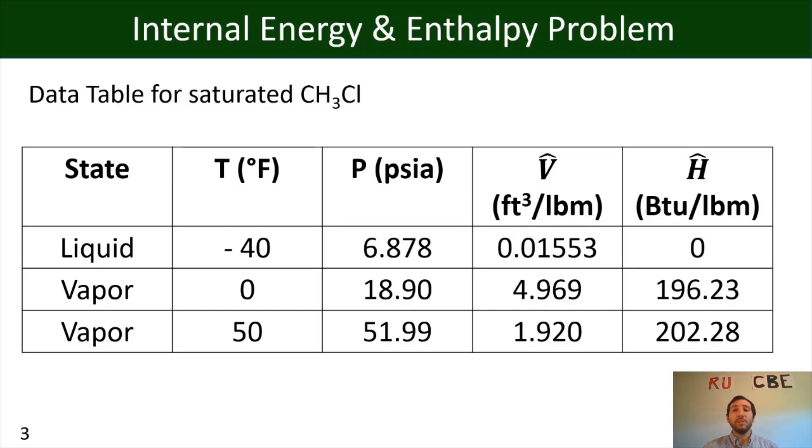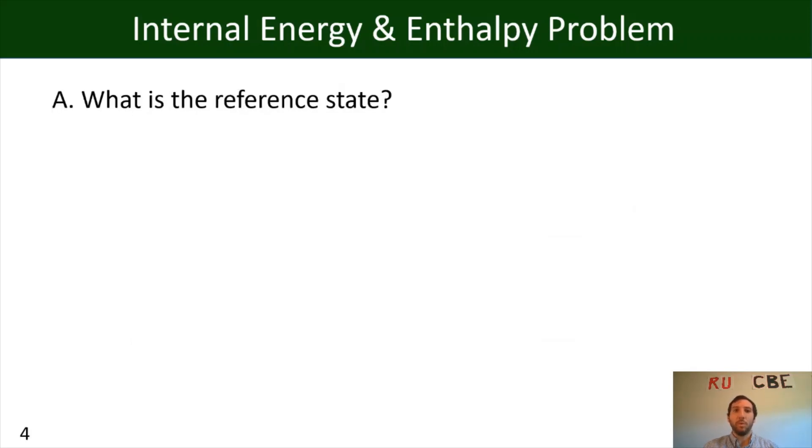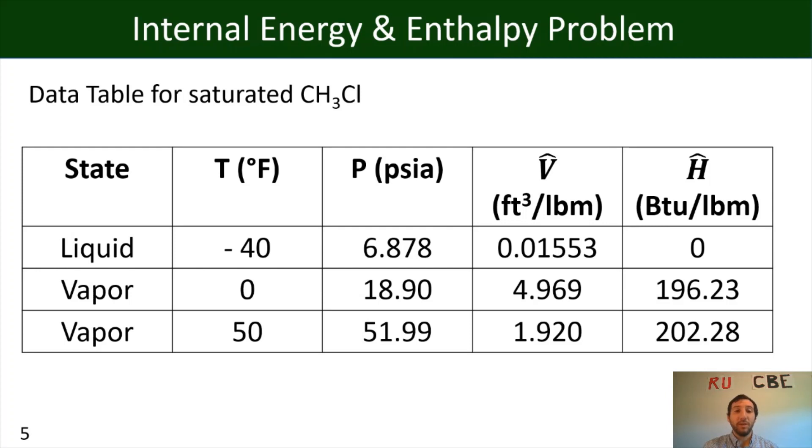And the first question I have for our system is, what is the reference state? And as I mentioned before, that reference state is going to be the one where our enthalpy is going to be defined as 0. So if we look again at this, if we look at our table again and look to identify where we have 0 for enthalpy, we're going to notice that it's actually located for the state where we have a liquid. It's at negative 40 degrees Fahrenheit, pressure of 6.878 PSI, and a specific volume of 0.01553.